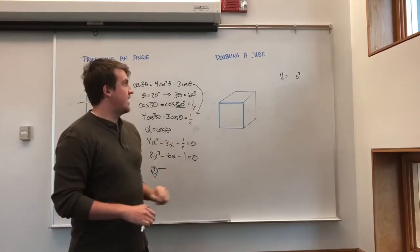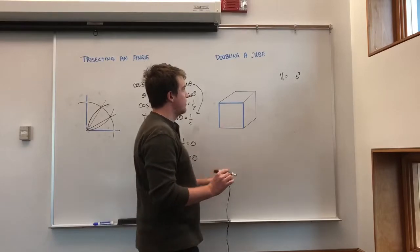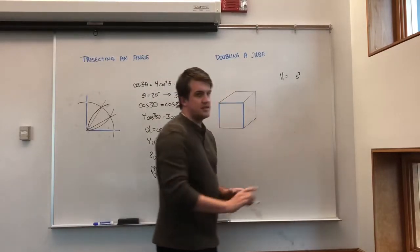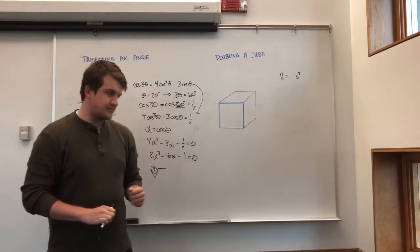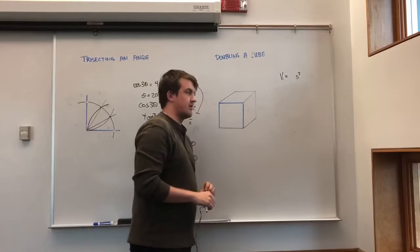Next, let's look at doubling a cube. Now, if we look at the volume of a cube, we know that the cube is just the base length and height times together. Thus, we get s cubed equal to our volume.